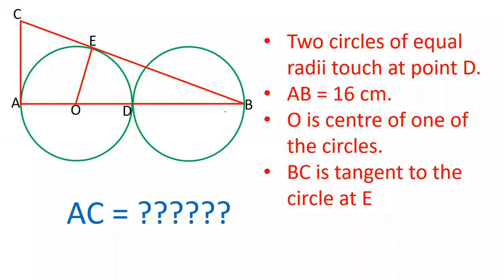Hello friends. Welcome to our YouTube channel. In this video we have two circles of equal radius. O is the center of one of the circles. D is the point at which the two circles touch each other — they are touching at point D.